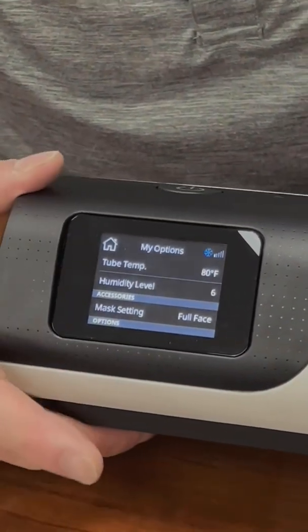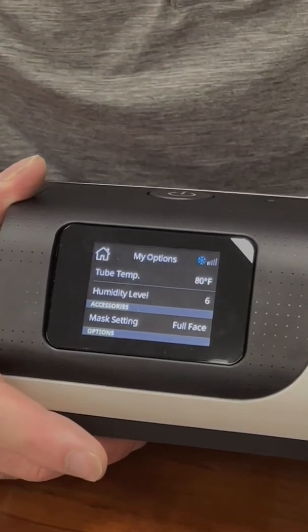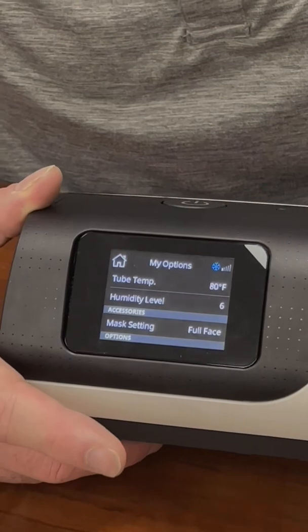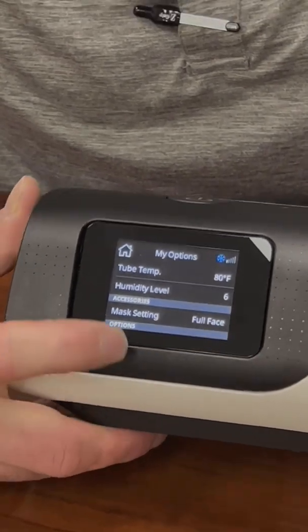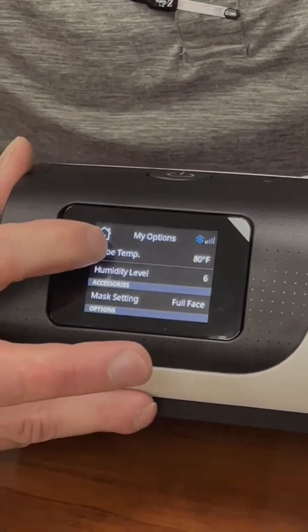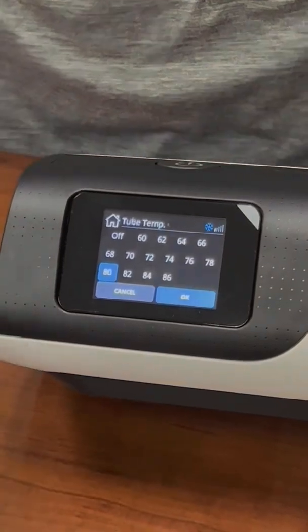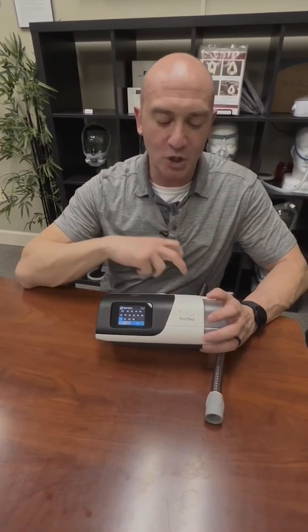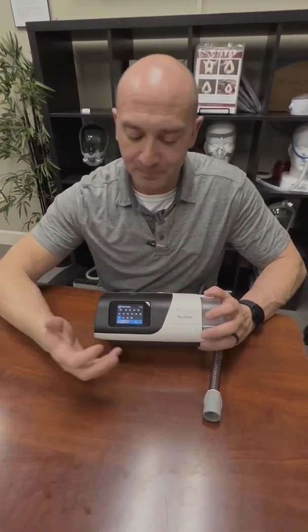Now that humidity level is 0 to 8. So it's a little bit higher than just your base standard coming from the manufacturer. But you also want to adjust that tube temperature. So if you're getting water and droplets in the tubing, you want to increase the tube temperature so you don't get that.